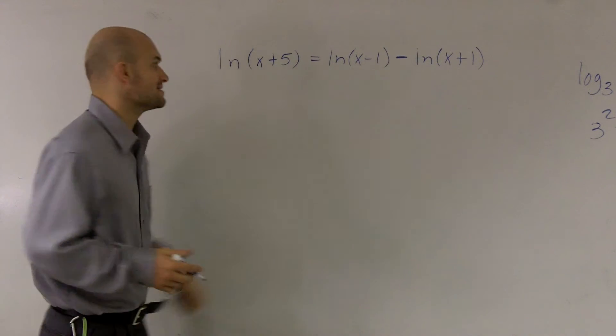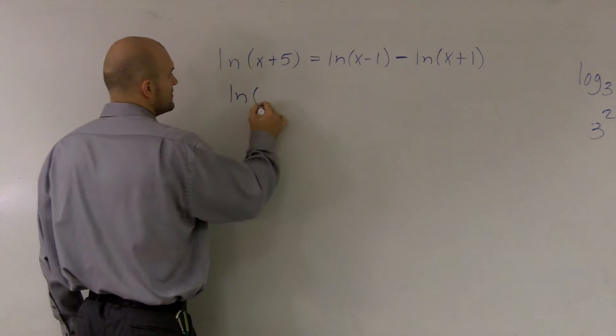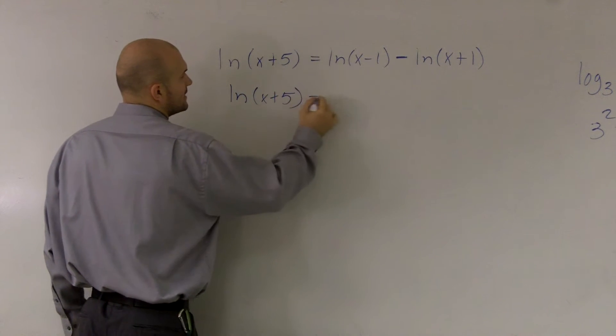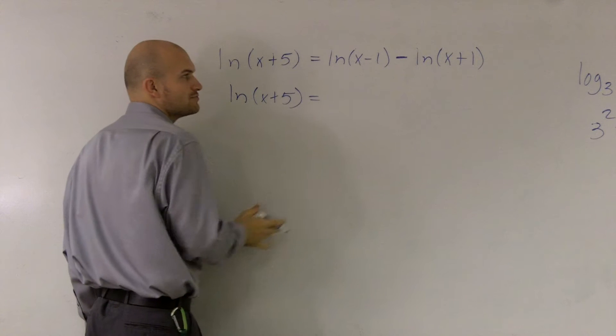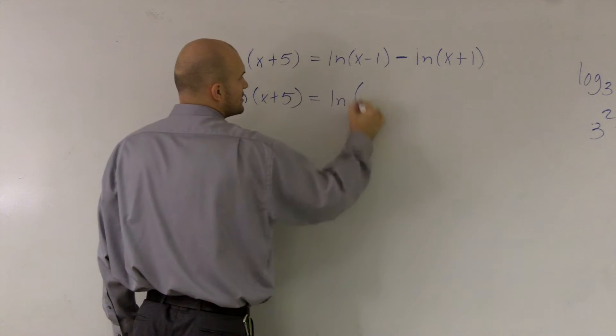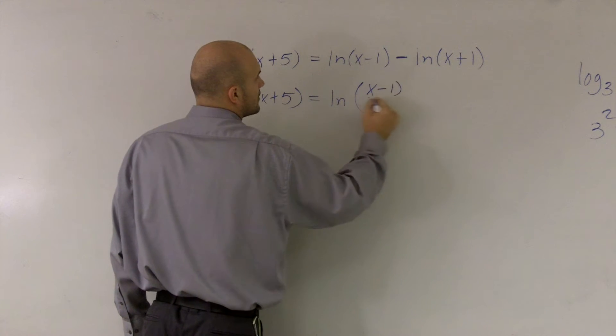So I'm going to want to see if I can condense this. I'll do ln(x+5) equals, since I have subtraction, I can rewrite this as one single logarithm as division.